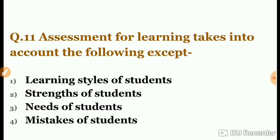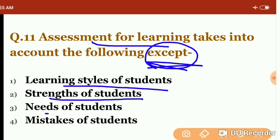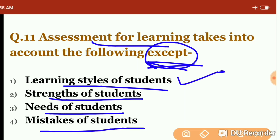Question eleven: assessment for learning takes into account all of the following except — learning styles of students; strength of students; needs of students; or mistakes of students. For formative assessment we consider learning styles, strengths, and needs so we can do diagnostic evaluation and identify scope for improvement. Mistakes of the student is the odd one out. The answer is the fourth option.